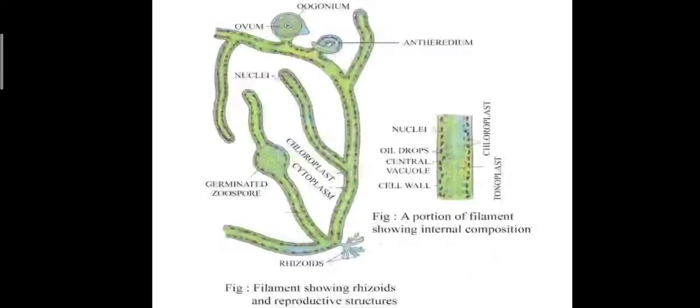Under this class, the type of algae we have to study in detail is Vaucheria. Looking at its taxonomical position: Vaucheria comes under the division Xanthophyceae, the class is Xanthophyceae, the order is Siphonales, and the family is Vaucheriaceae. Vaucheria is a yellow-green algae and is mostly found in fresh water.